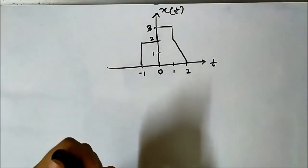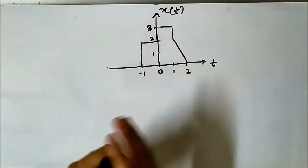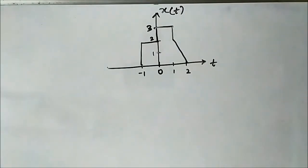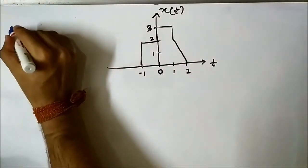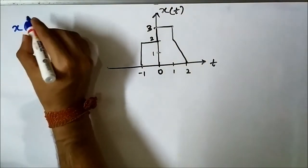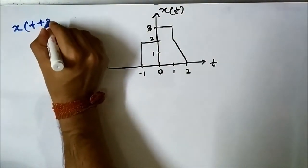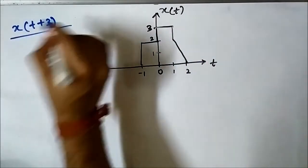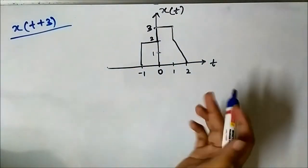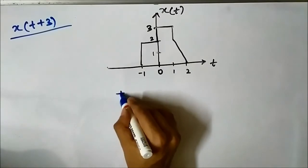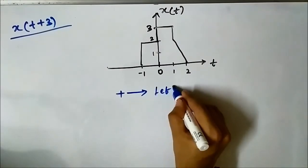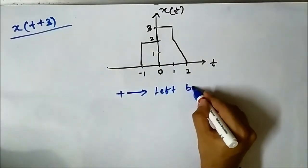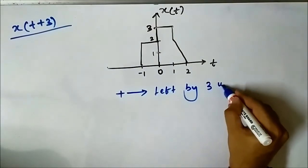Here we have another signal XT on which we also have to perform shifting operations. Let us perform the shifting operation XT plus 3 on this signal. Again the same approach: the plus sign means shifting will take place to the left by the given value — by 3 units.